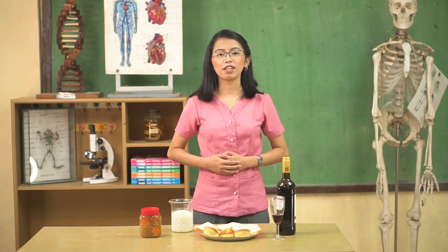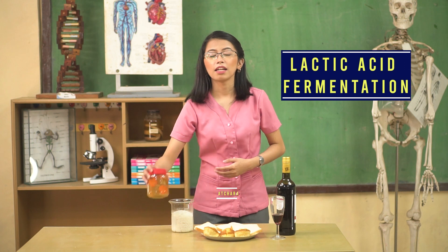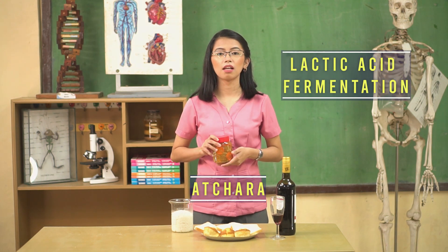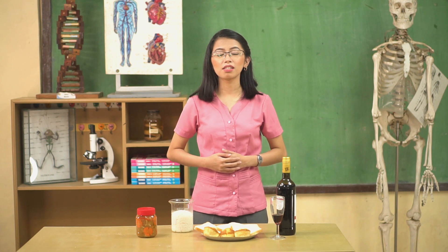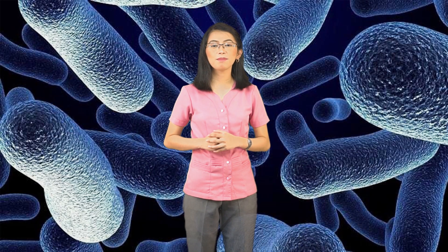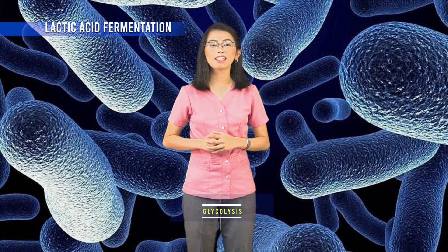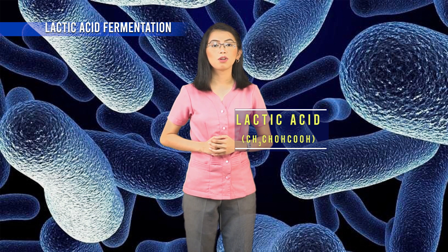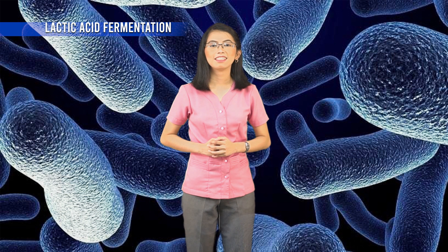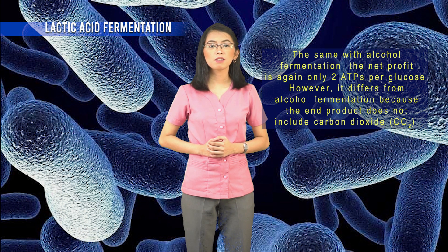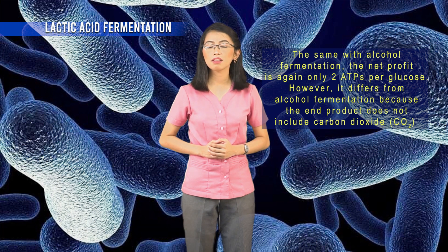The second type of anaerobic respiration is lactic acid fermentation. Atshara is a local delicacy made from pickled green papaya, served as a side dish, and is produced through lactic acid fermentation. Similar to alcohol fermentation, lactic acid fermentation begins with glycolysis. Pyruvic acid from glycolysis is reduced directly to lactic acid as an end product by NADH, without the release of carbon dioxide. The net gain is again only 2 ATPs per glucose. However, it differs from alcohol fermentation because the end product does not include carbon dioxide.